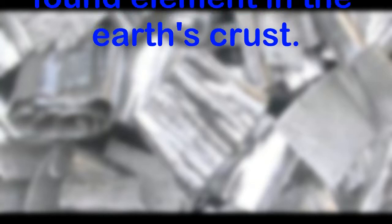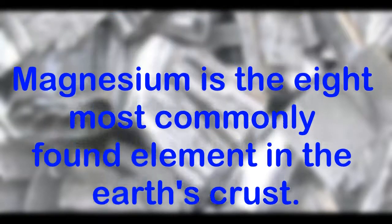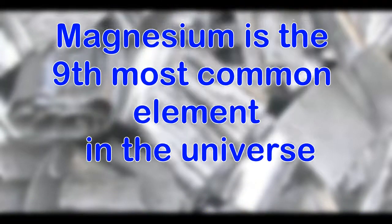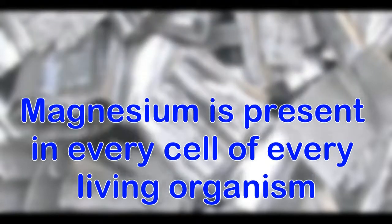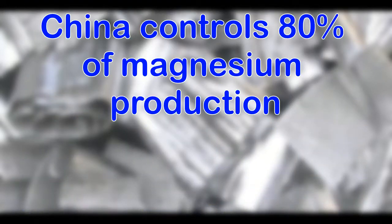Here are some fun facts about magnesium. Magnesium is the 8th most commonly found element in the Earth's crust. Magnesium is the 9th most common element in the universe. Magnesium is present in every cell of every living organism, and China controls 80% of magnesium production.